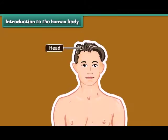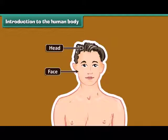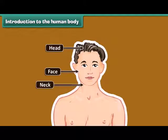As we can see here, head is the uppermost part of the body. We find hair present on the head. The next body part is our face. The face has eyes, nose, tongue and ears.